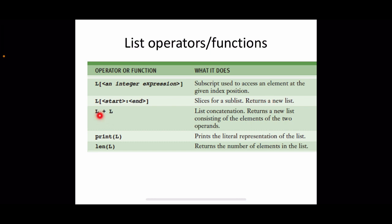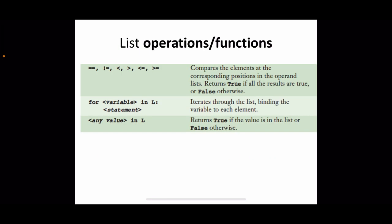Concatenation using the plus operator combines two different lists and returns a new list containing the elements of both operands. We can also print the value of a list, and find the length of a list — the number of items — using the len function, which returns the number of elements in the list.